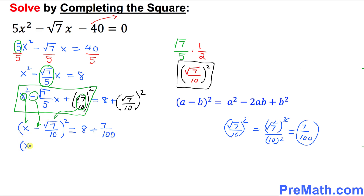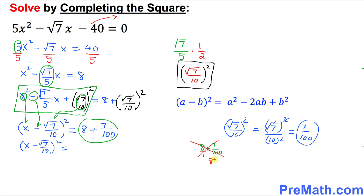So we have (x − √7/10)² equals 8 plus 7/100. Writing 8 as 8/1 and cross-multiplying: 8 times 100 is 800, plus 7 times 1 is 7, all over 100. So the right-hand side simplifies to 807/100.